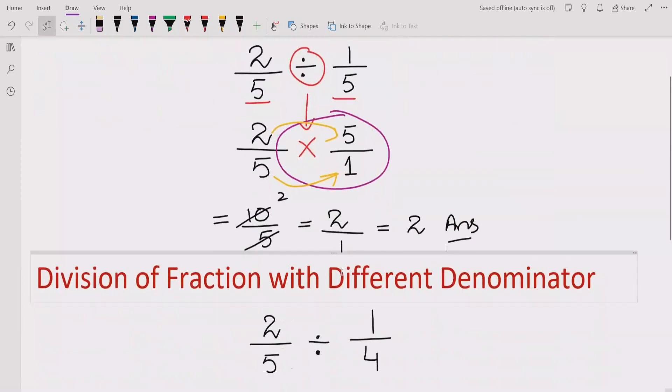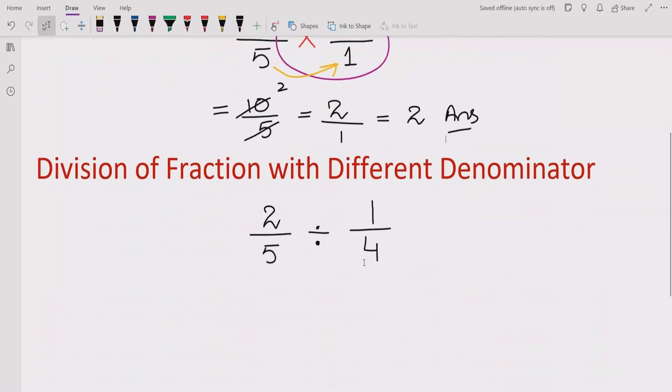And if we have two fractions with different denominator just like here 5 and 4, how you can simplify these fractions. So same rule we will apply here: 2 upon 5. And now division sign we have to change with multiplication. So we have to reciprocal this fraction 1 upon 4. Now it becomes 4 upon 1.